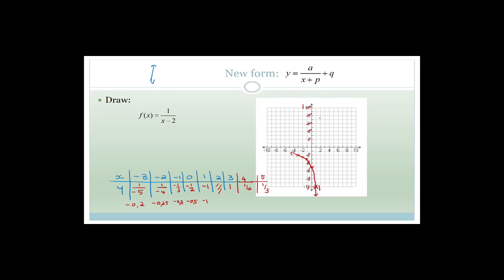The asymptote is at x equals two — the new asymptote when x equals two. When x is three, y is one. When x is four, y is a half. When x is five, y is going to be a third. So this graph is doing that.